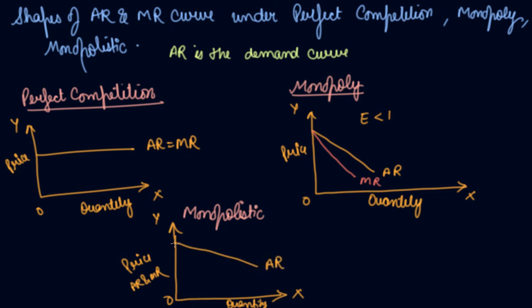Similarly your MR curve also is more flatter under the monopolistic competition. Because a little change in price we have great change in your quantity.